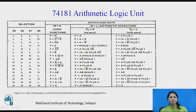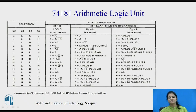For arithmetic functions when all selections are low: without carry it passes the input A as-is, but with carry it shows A plus 1. When S3 is low and others are high, it shows the function A·B-bar minus 1 without carry, and A·B-bar with carry.